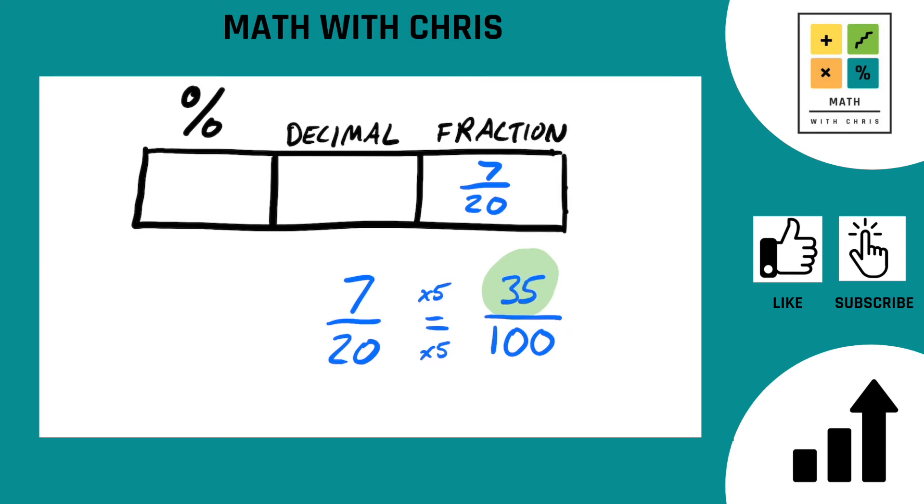And 35 over 100, we've found our answer. That means 35% is equivalent to 7 20ths. That's nice and easy.